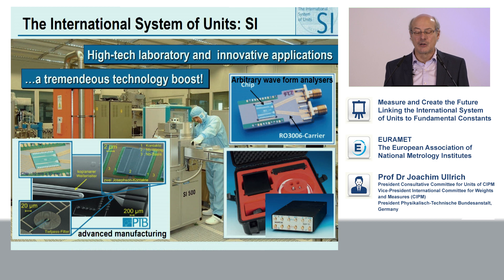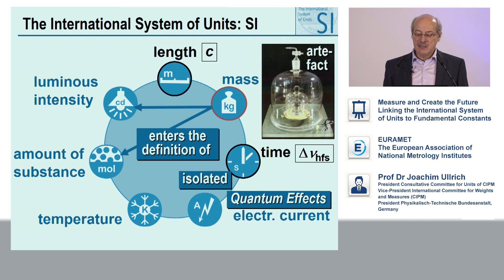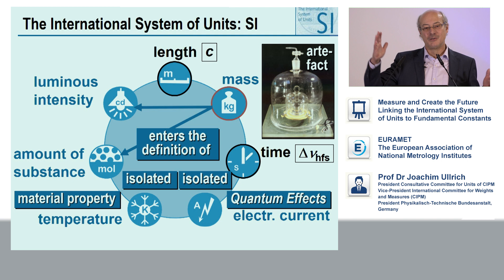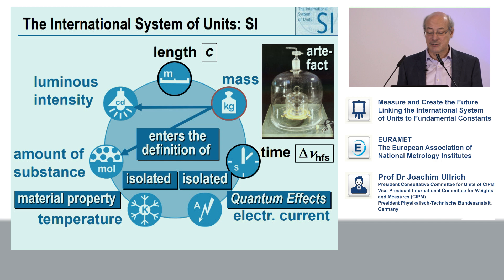Nevertheless, the ampere in the present system is isolated and based on quantum effects. Also isolated is the temperature, the Kelvin, because it's defined on the basis of a material property — namely the triple point of water and the zero point. So we have only two points in the whole scale to realize the unit, and we have to extrapolate and interpolate in between, which is also difficult.